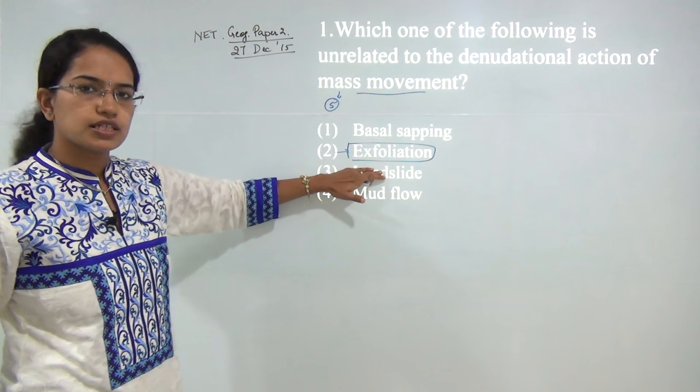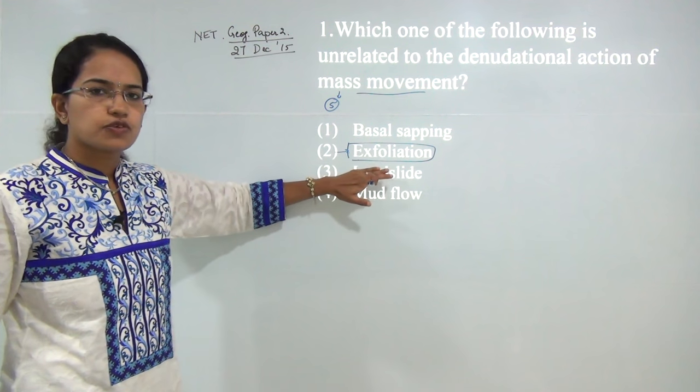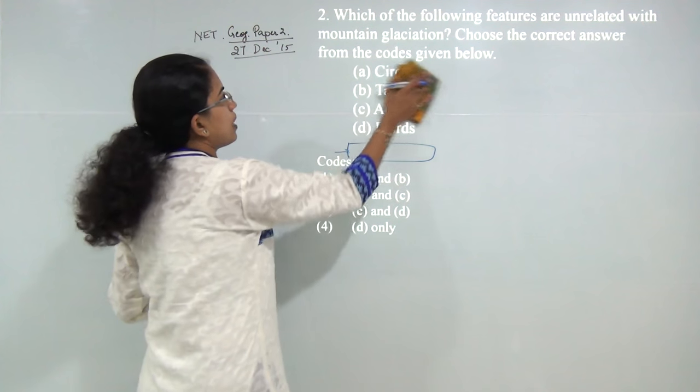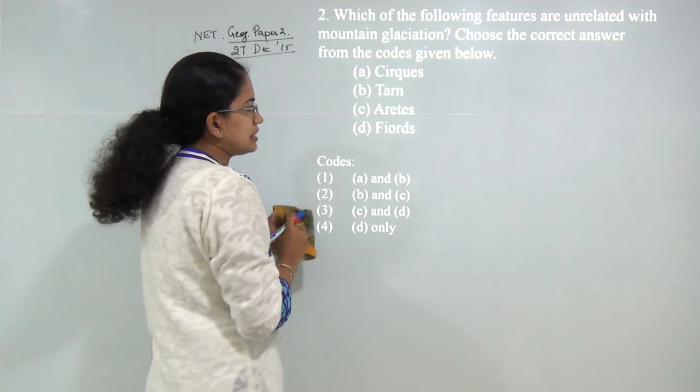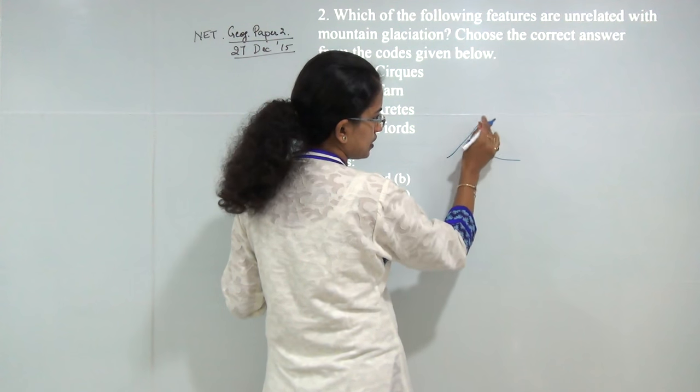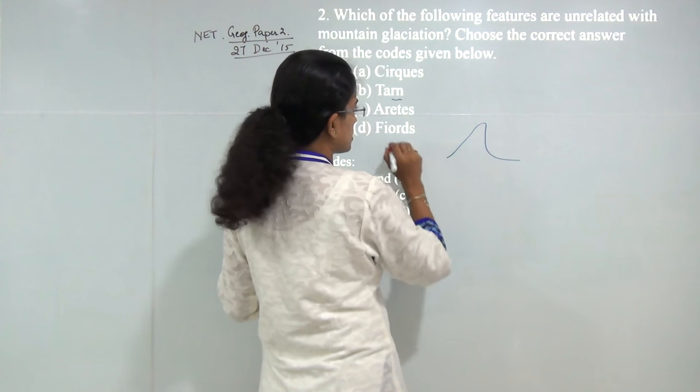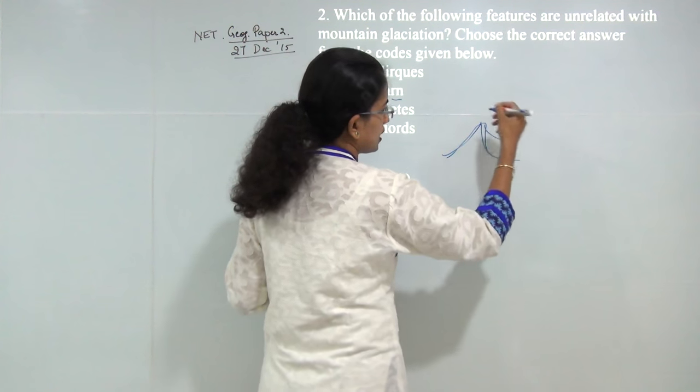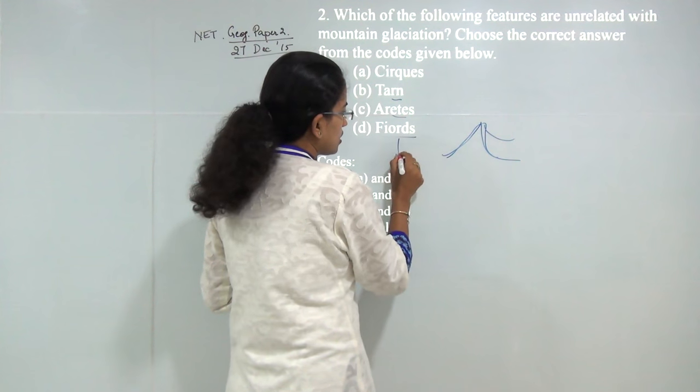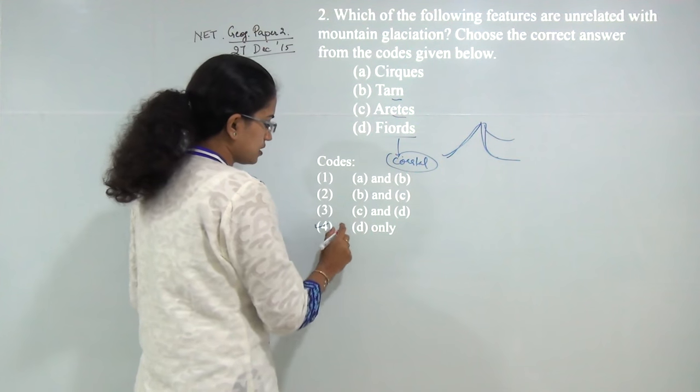We have already covered this in the class on weathering. Next: which of the following features are unrelated to mountain glaciation? When we talk about glacial landforms you have cirque formation in the mountain, the lake formation known as tarn, and if you have cirque on two or more sides it forms a pyramidal horn known as arête. Fjords are part of coastal landforms, so the odd man out here would be D. The answer would be 4.